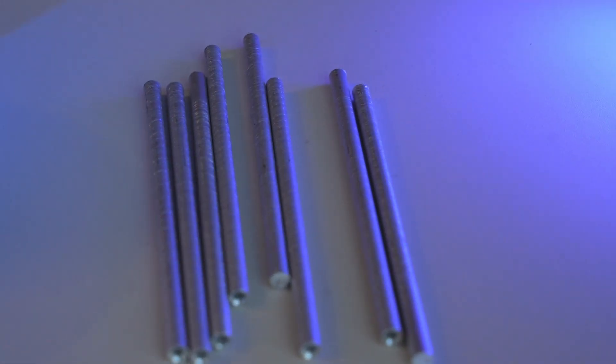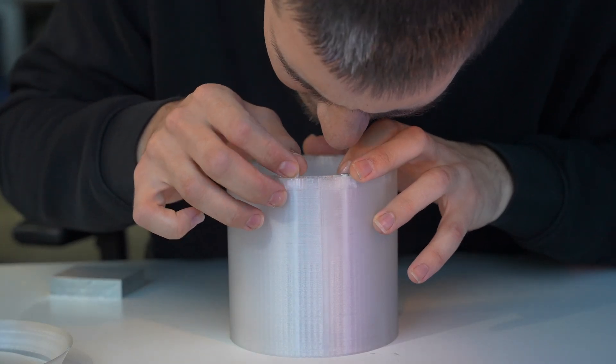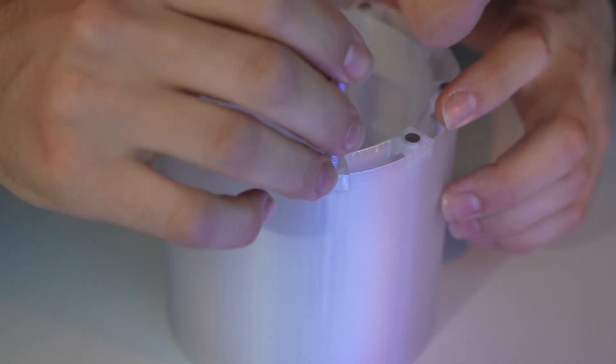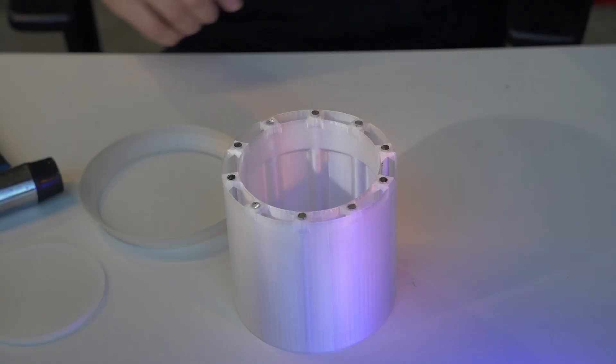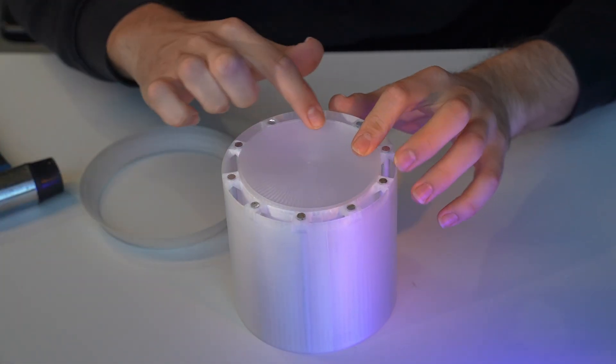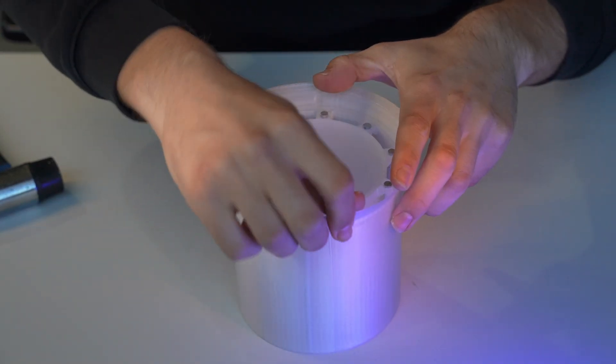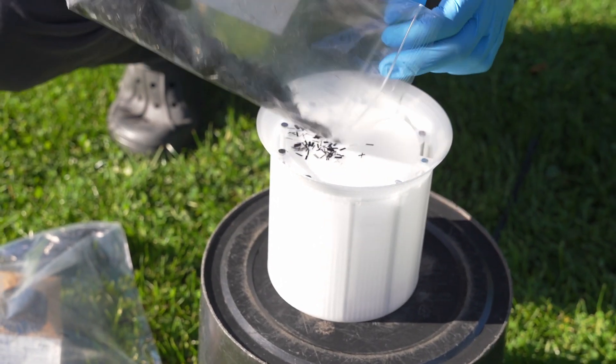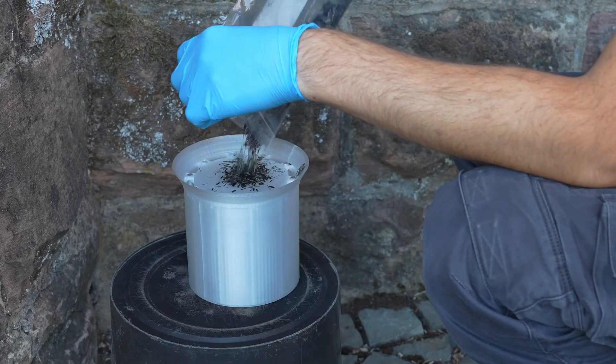We also designed features in the shell itself to locate our inserts. To fill up the shell with carbon fiber even faster, we designed this funnel specifically for this part. We are using 5 to 15 millimeter chopped carbon fiber.